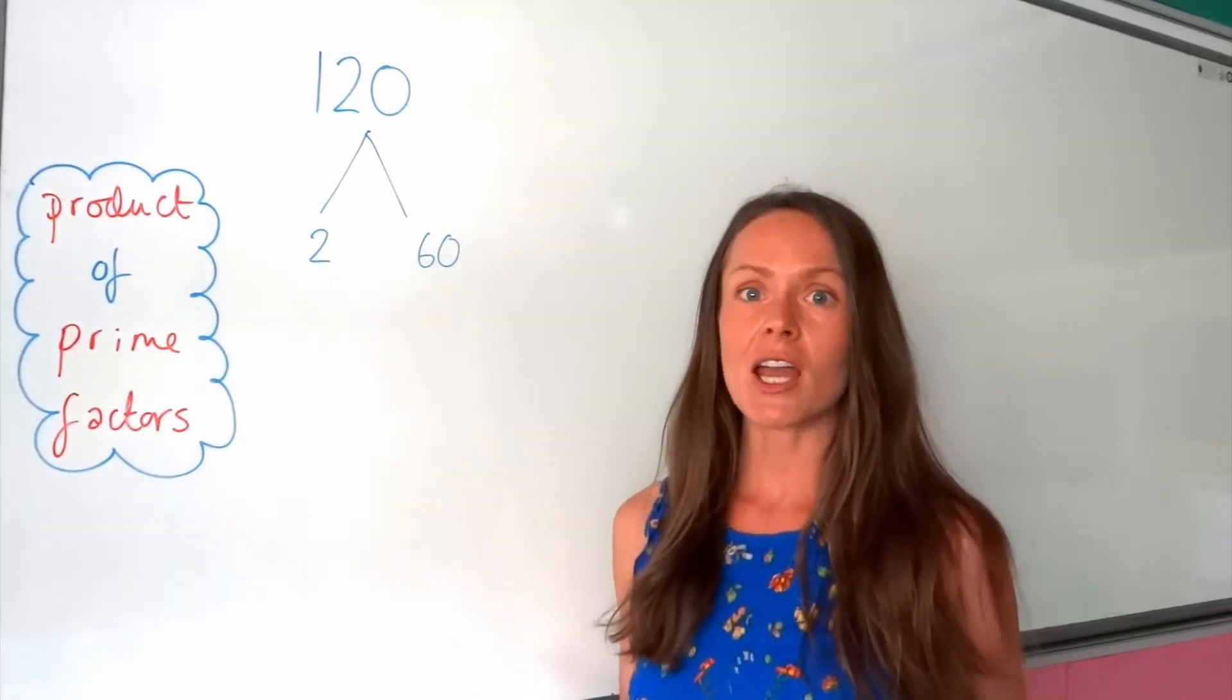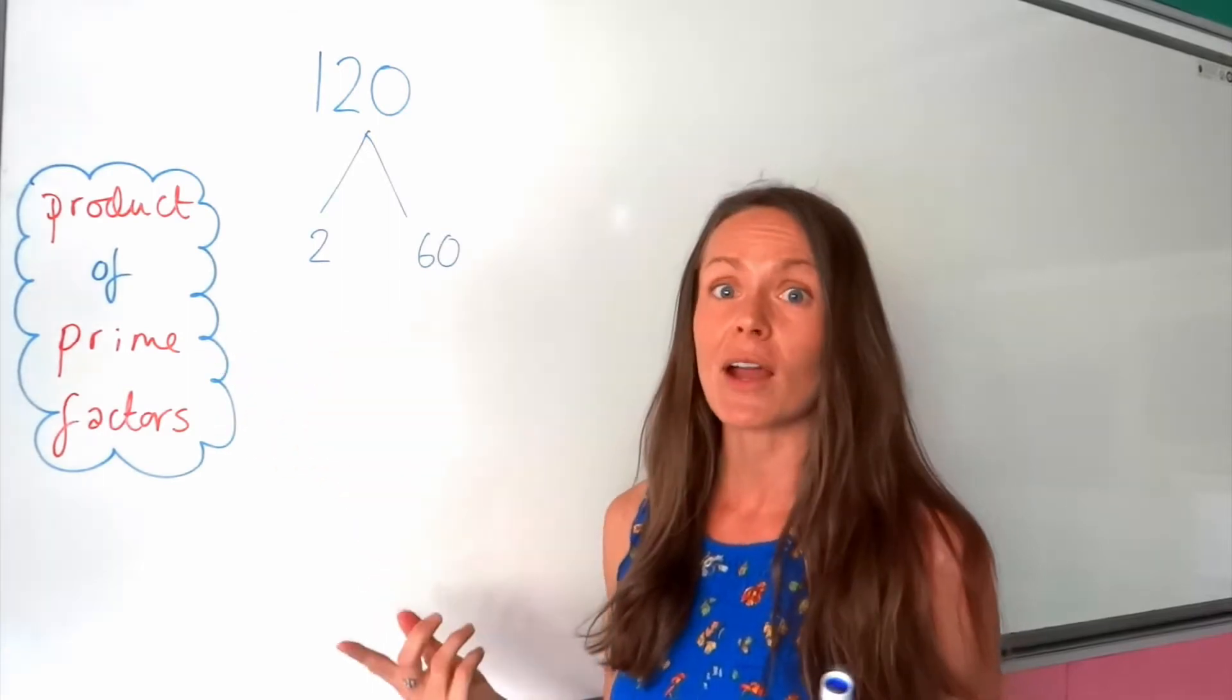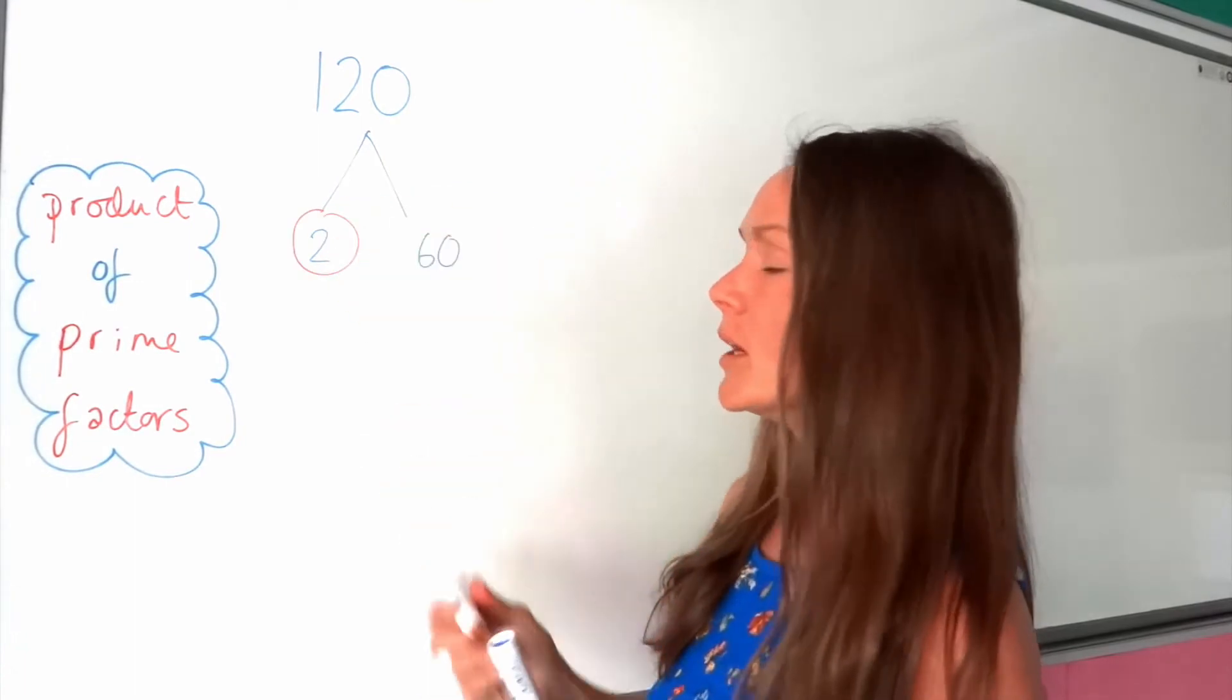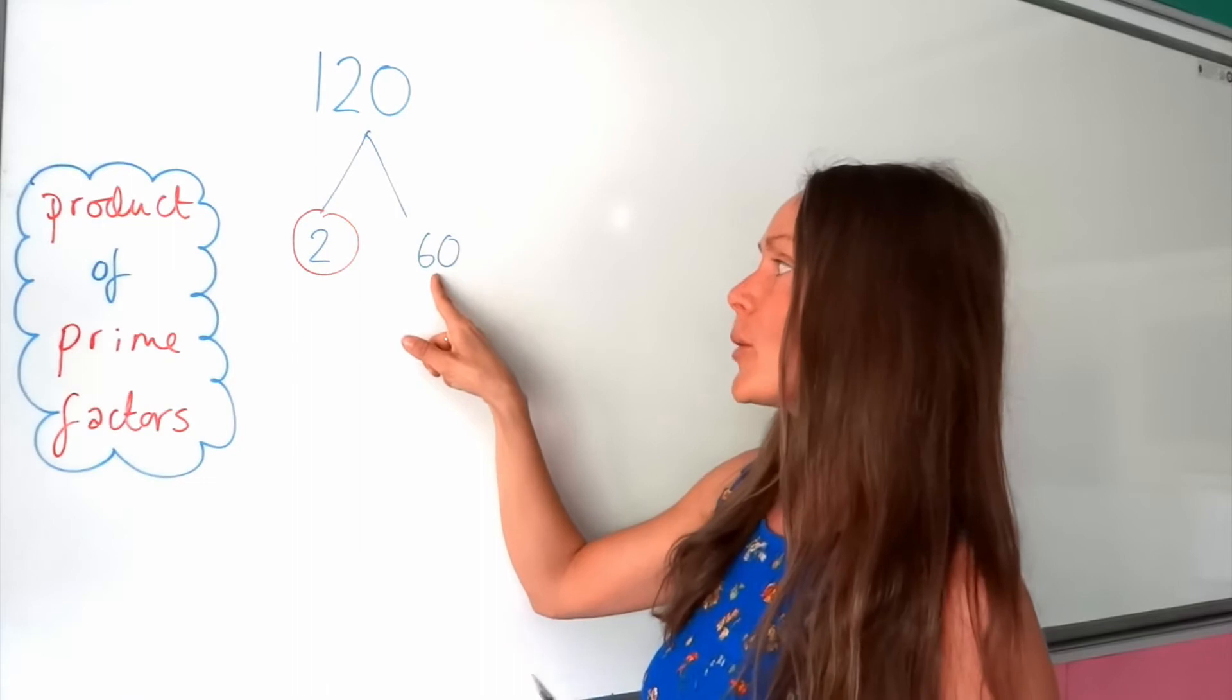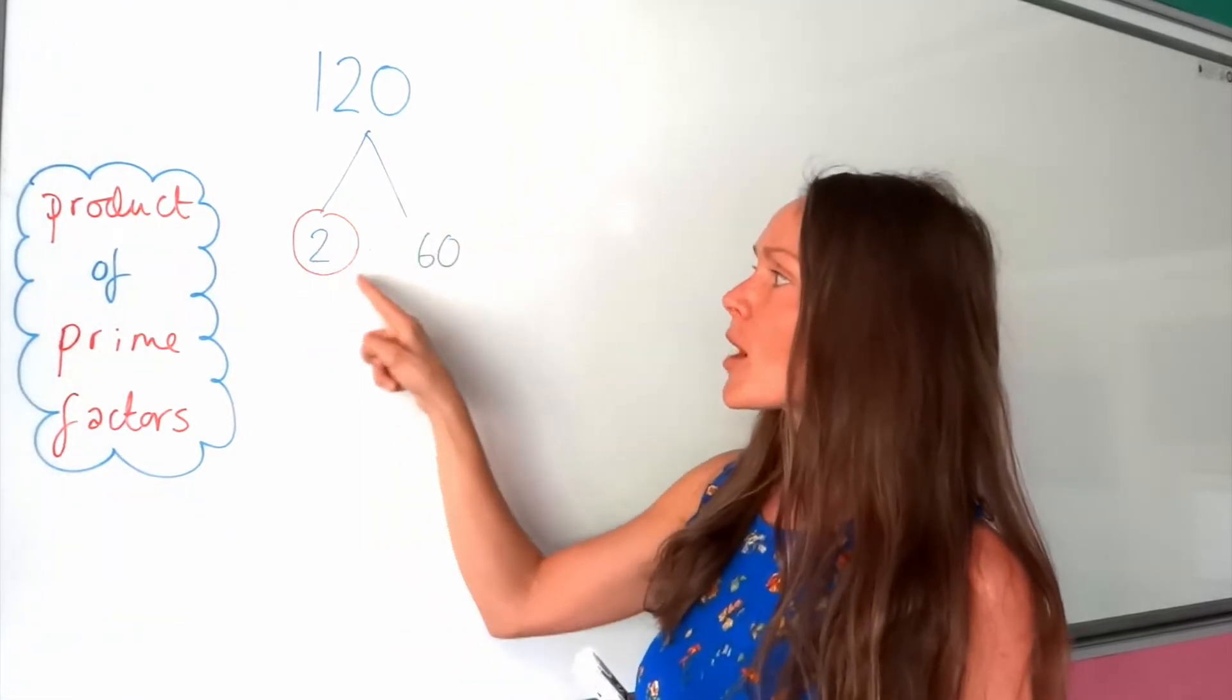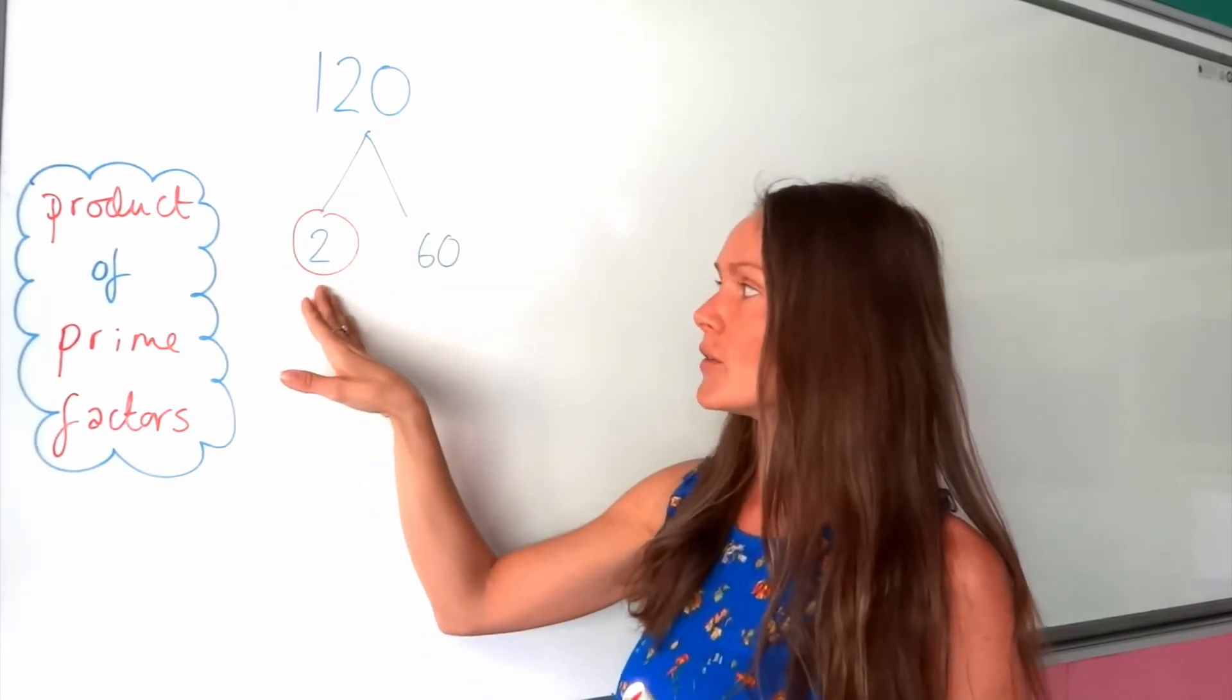Now, every time you get a prime number, because remember, we're searching for the prime factors, you have to circle it. So 2 is a prime number, because it only has two factors, one and itself. 60, however, has other factors, so this one is not prime. This prime number here, this prime factor, we've finished with that one, so I'm going to circle it and leave that one over there.